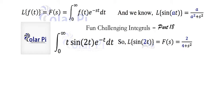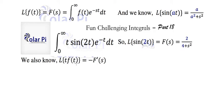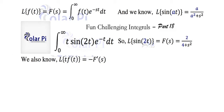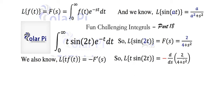By another video I've already made — also linked below — we know that the Laplace transform of t times f of t equals the negative of the derivative of the Laplace transform of f of t. So to find the Laplace transform of t times f of t, you take the Laplace transform of f of t, take the derivative of that, and then negate it. We can use this formula to find the Laplace transform of t times sine 2t.